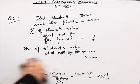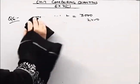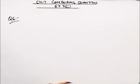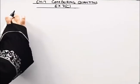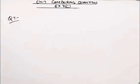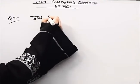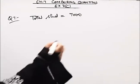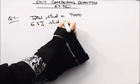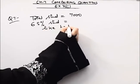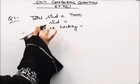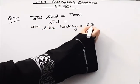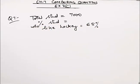Now we will come to question number 7. Question number 7 is: 65% of children of the school like to play hockey and the rest like to play badminton. The total students are 7000. 65% of students like to play hockey.